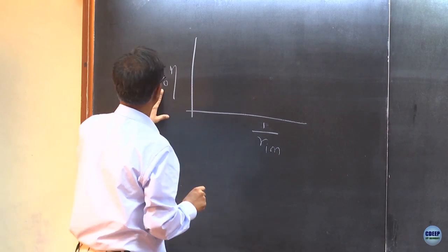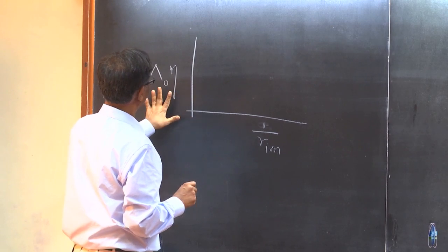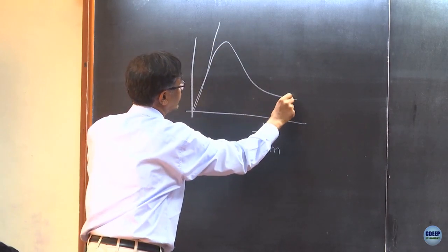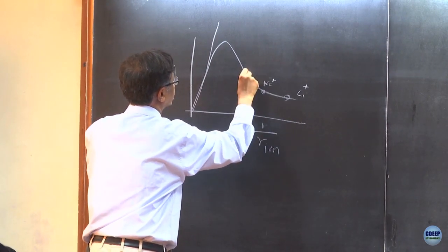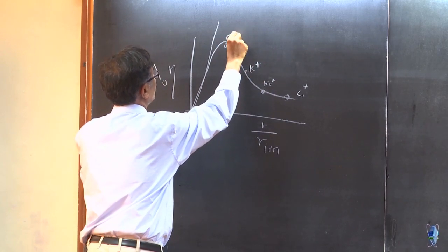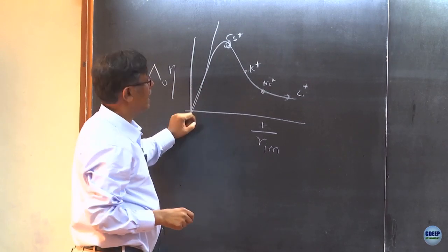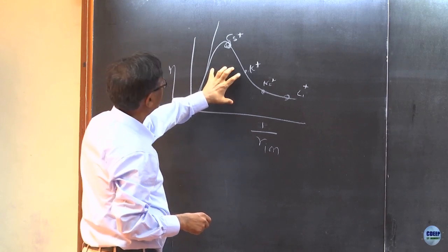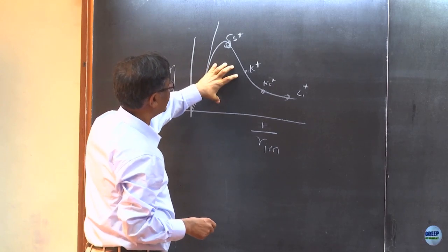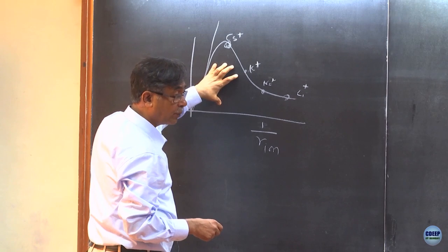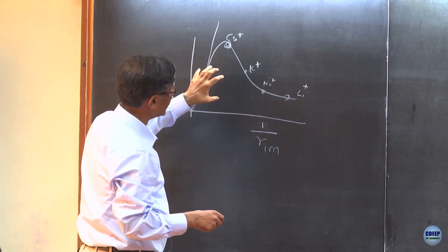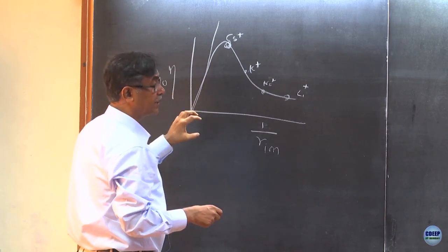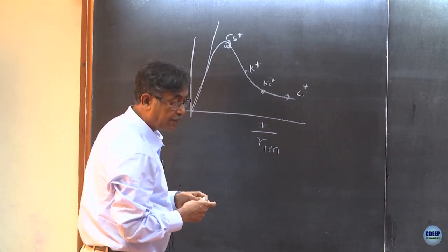This product should vary as 1/R_ion. Instead, what happens is it comes down, with lithium, then sodium, then potassium, going like that with cesium and rubidium. In undergraduate textbooks like Castellan, Moore, Glaston, or Atkins, they call this breakdown of Walden product and give a pictorial description like iceberg formation around small ions.